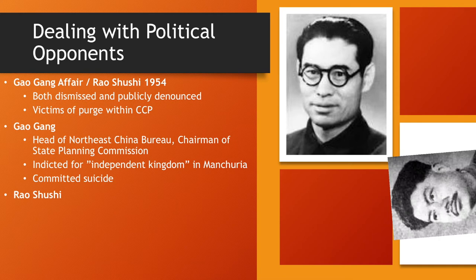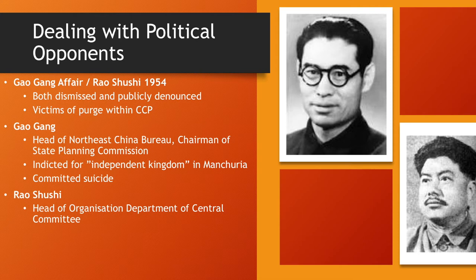Rao Shushi also had a very high position — head of the organization department of the Central Committee. He was accused of rightist deviation; he criticized some of the campaigns during the first five-year plan, or was not loyal or enthusiastic enough in implementing these policies according to Mao. He was also purged and died in prison.